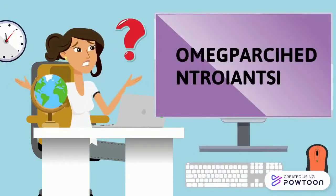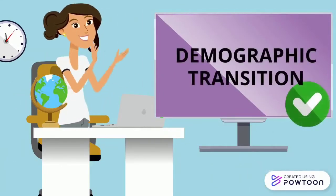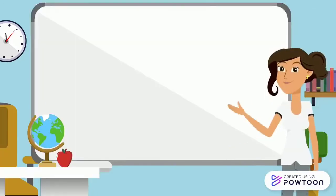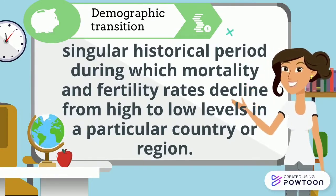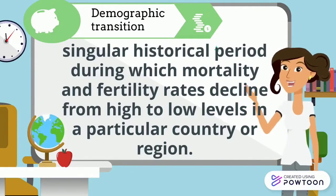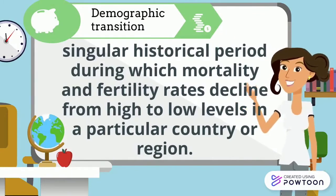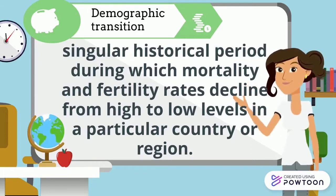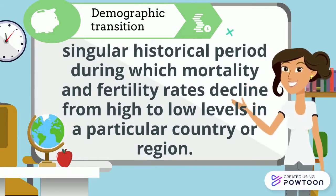I challenge you to guess this word — it is the demographic transition. Demographic transition is a singular historical period during which mortality and fertility rates decline from high to low levels in a particular country or region. The mortality rate is the number of deaths in a given area or period or from a particular cause. The fertility rate is the ratio between the number of live births in a year and the whole female population of childbearing age, with the average number of women between 15 and 50 years of age over the year.